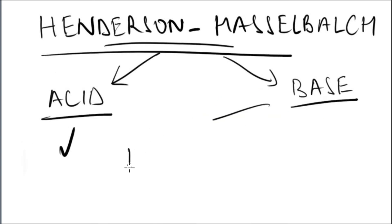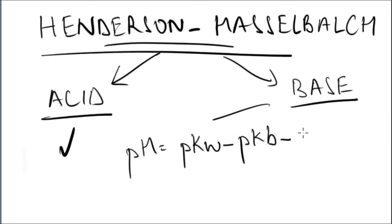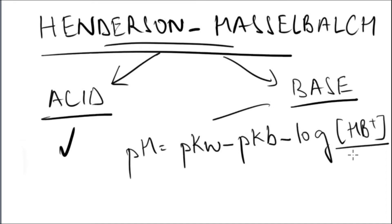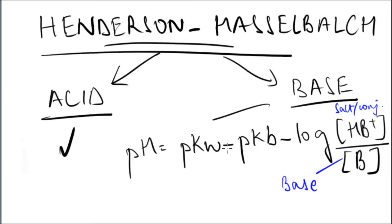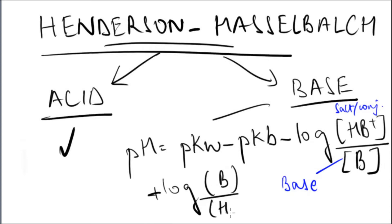For the base, the Henderson-Hasselbalch equation is pH equals pKw minus pKb minus the logarithm of the conjugate or salt divided by the base. If you want to switch the sign to a positive logarithm, you also switch the ratio, so it becomes plus the logarithm of the base over the conjugate or salt.